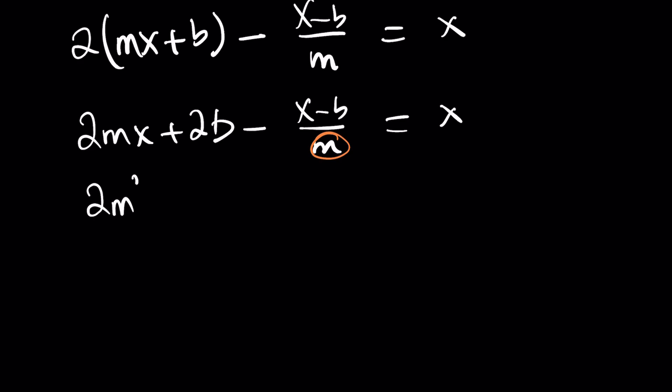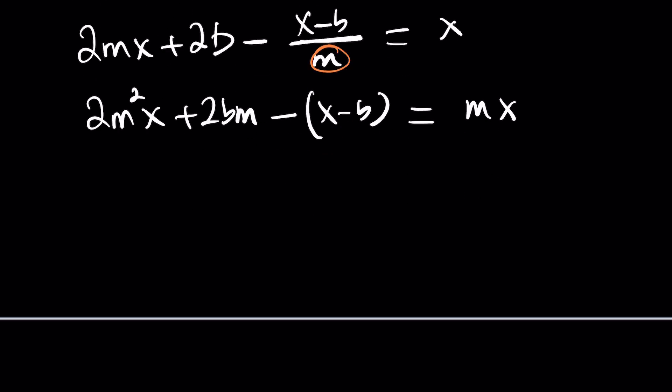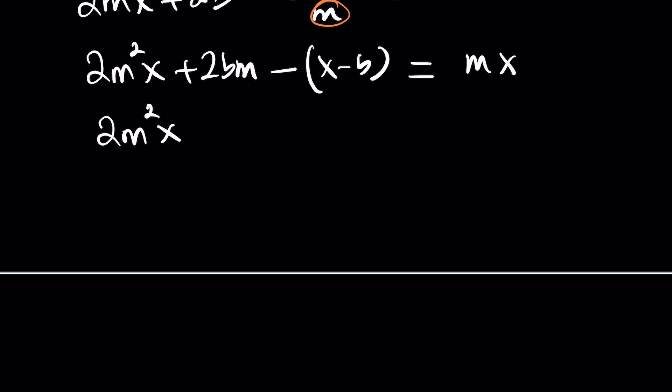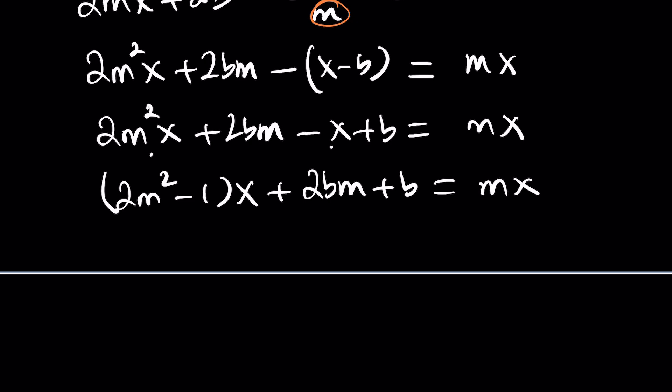Let's go ahead and multiply both sides by m so that we can get rid of the denominator. So we get 2 m squared x plus 2 bm minus, and then this is going to be x minus b. Notice that you have to keep that in parentheses or negate it because this works as a parentheses, this fraction bar. Now you got to go ahead and expand it. And then we need to collect like terms. Notice that these two are like terms, so we can write it as 2 m squared minus 1. That's the coefficient of x. And our constant term is 2 bm plus b. And on the right hand side, we don't have a constant. The constant is zero. So the coefficient of x is m, so it needs to be m here. And since there's no constant on the right hand side, that needs to be a zero.